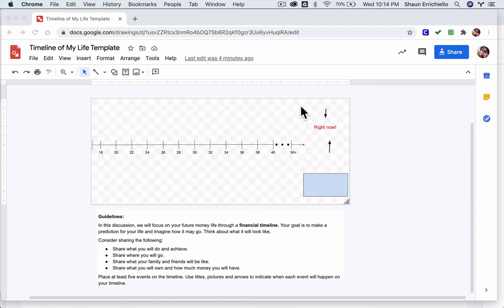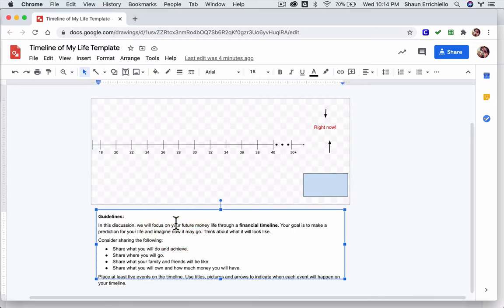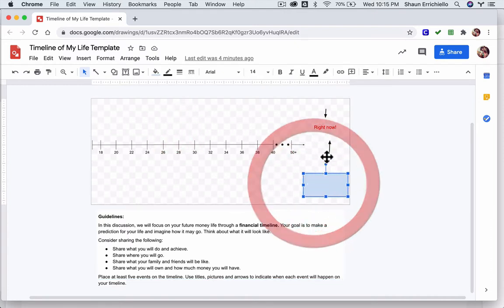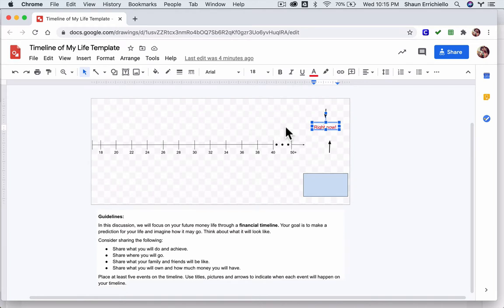So this is the template for your financial timeline. Down here we have the prompts for the project, and up here we have the timeline itself with some text boxes to use, arrows and title headlines. Your goal is to put a picture of yourself on the timeline and then five other significant events that you see happening in your future.